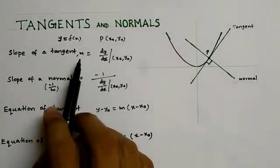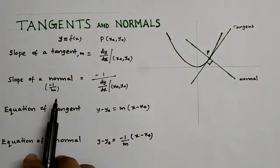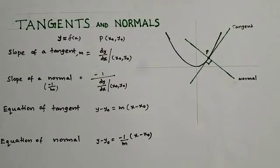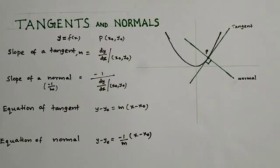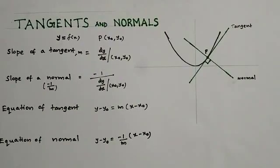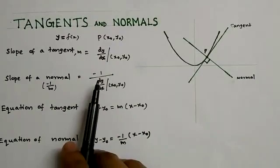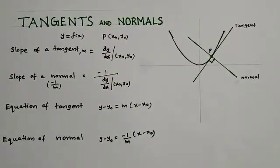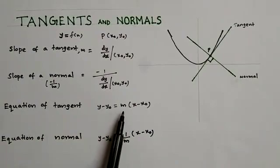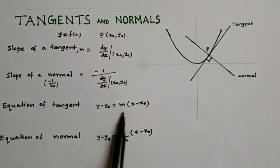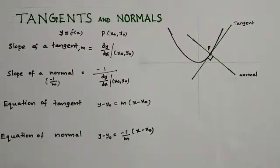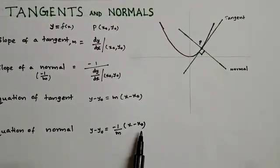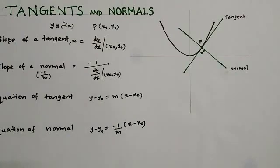Slope of normal: given tangent slope m, the equation of the tangent line is y minus y0 equals m into x minus x0, where m is the slope of the tangent. The equation of the normal is y minus y0 equals minus 1 by m into x minus x0, where minus 1 by m is the slope of the normal.